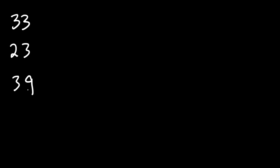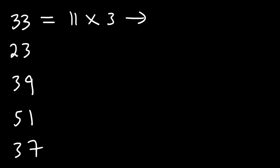Now I'm going to give you some practice problems. Consider these five numbers: 33, 23, 39, 51, and 37. Determine if each is prime or composite — go ahead and pause the video and work on these. Let's begin. 33 can be written as 11 times 3, so we don't need to use a 1, which means 33 is a composite number.